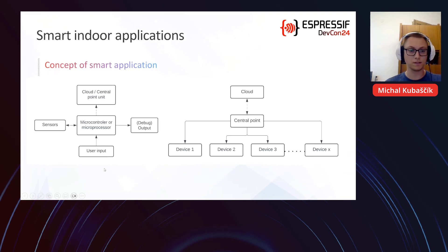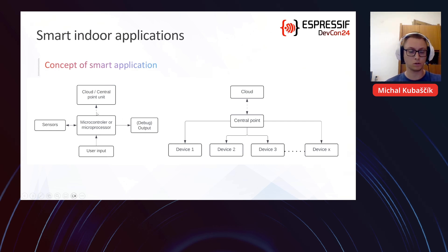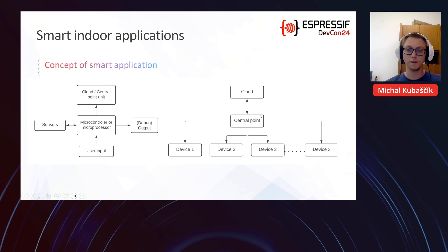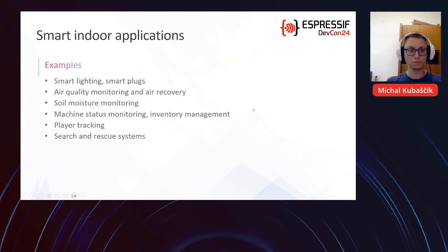On the left picture we can see a device concept or node of a smart application that has some sensors, can have some user input for configuration, and some output for the actuator unit. It communicates with some central point or some cloud. On the right picture we have a design of a network with multiple devices connected to the central point, and the central point communicates with the cloud.